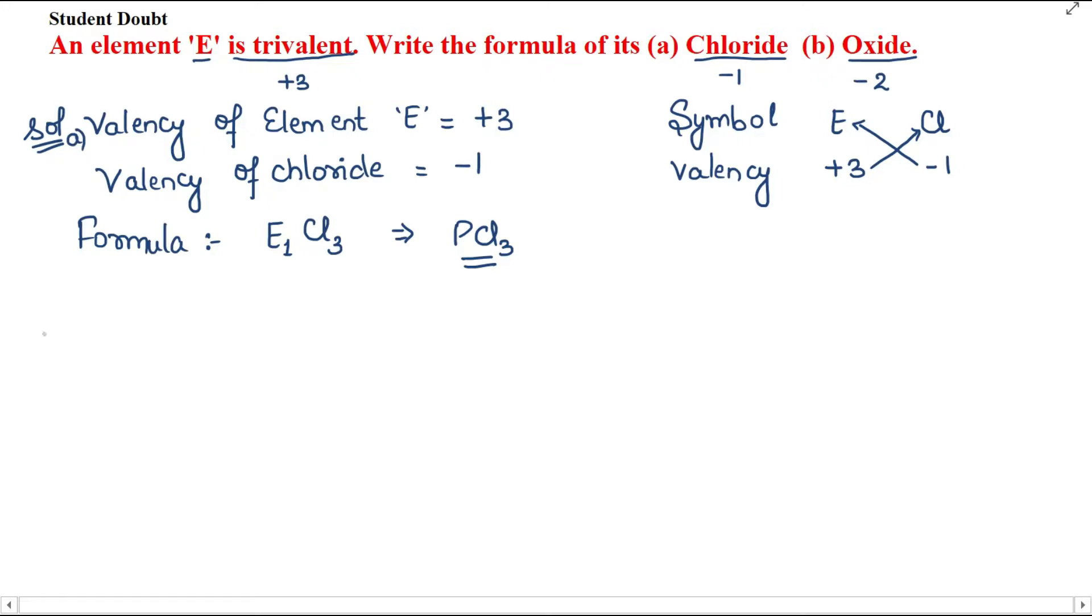Part b: we are talking about oxide. Again, the valency of element E is plus 3. The valency of oxide, as mentioned above, is minus 2.